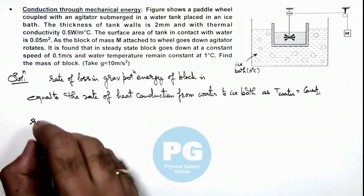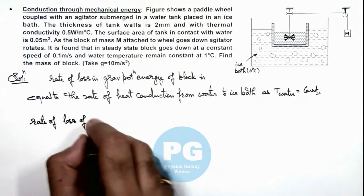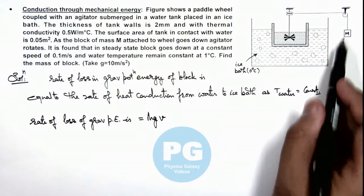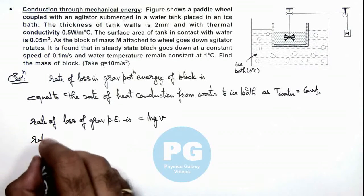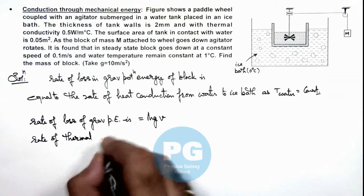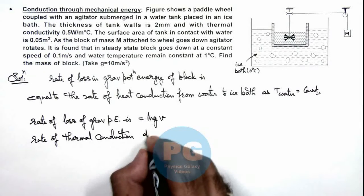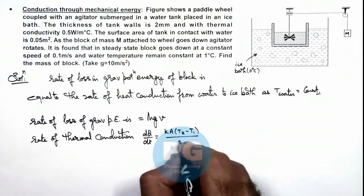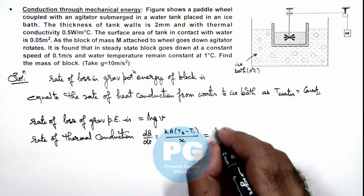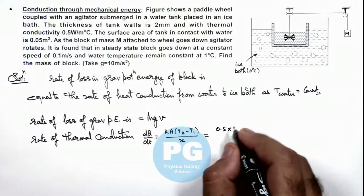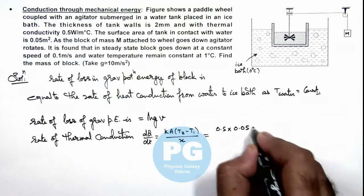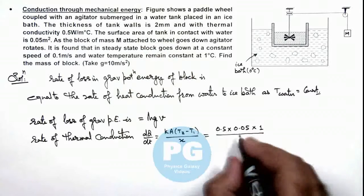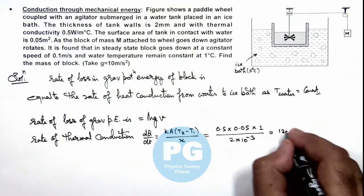The rate of loss of gravitational potential energy can be written directly as mgv, where v is the velocity of the descending block. The rate of thermal conduction is dQ/dt = kA(T2 - T1) / x. Substituting values: thermal conductivity k = 0.5, area A = 0.05 m², temperature difference = 1°C, and thickness x = 2 × 10⁻³ m. Simplifying, this gives us 12.5 joules per second.